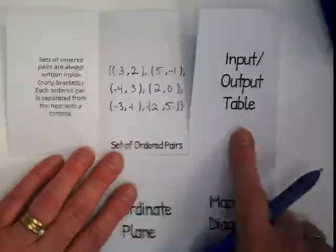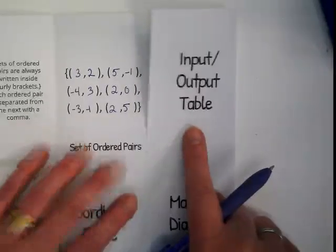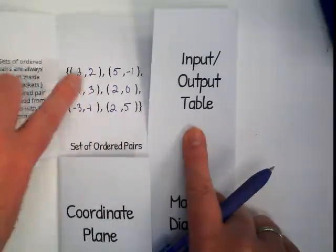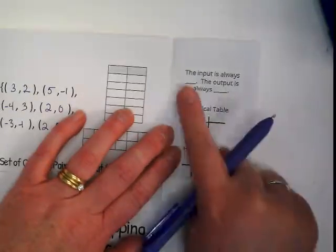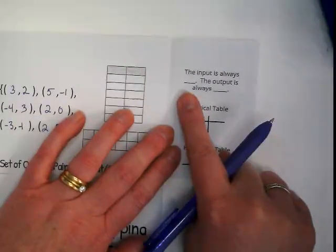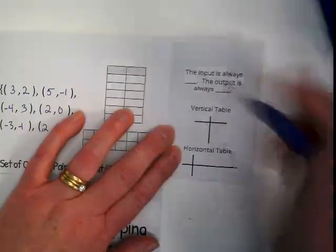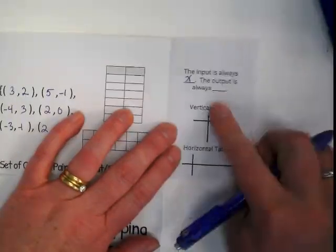Okay, we're going to go over here to input-output tables. We're going to be putting these same ordered pairs in, but let's take a look first at what it says here. The input is always here. The input is always what variable? The output. And the output is always? Y.